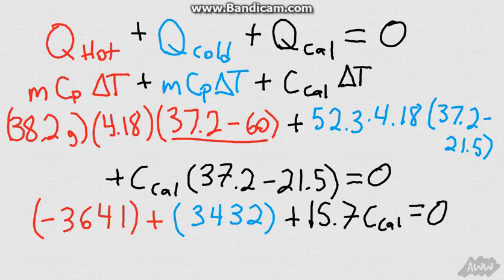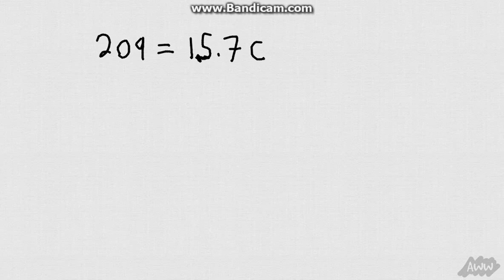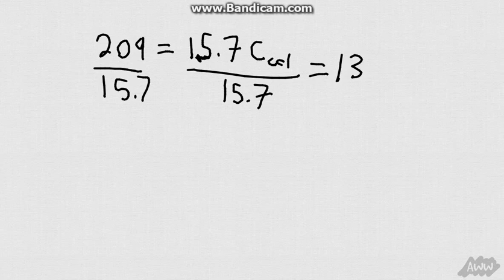So then we can just simply add these two numbers together and solve for our C Cal. So if we add these two numbers together, we will get a negative 209 plus 15.7 times the calorimeter constant equals zero. So we go ahead and set them on opposite sides. So we just add 209 to both sides. And we have 209 equals 15.7 times the C of the calorimeter. And we divide both sides by 15.7. And then that will equal our 13.3 joules per degrees Celsius if you carried all your units through. And that is our calorimeter constant.